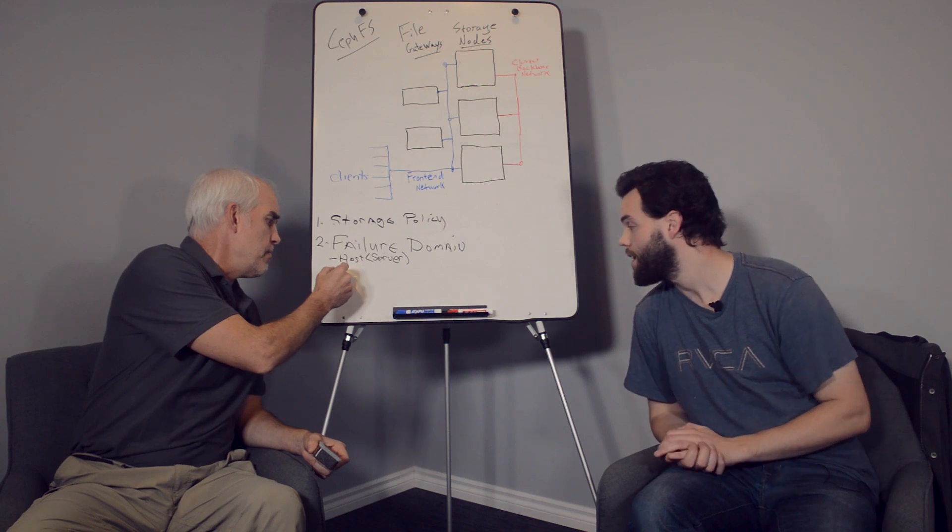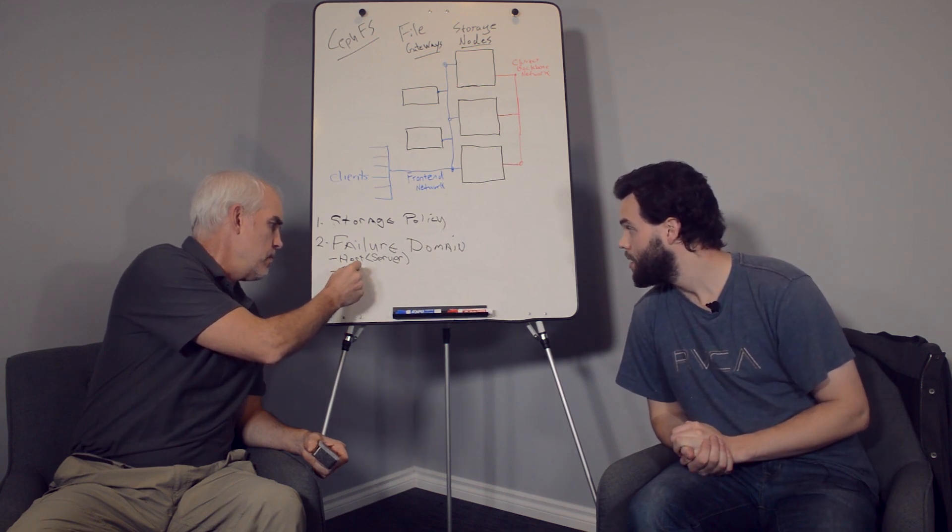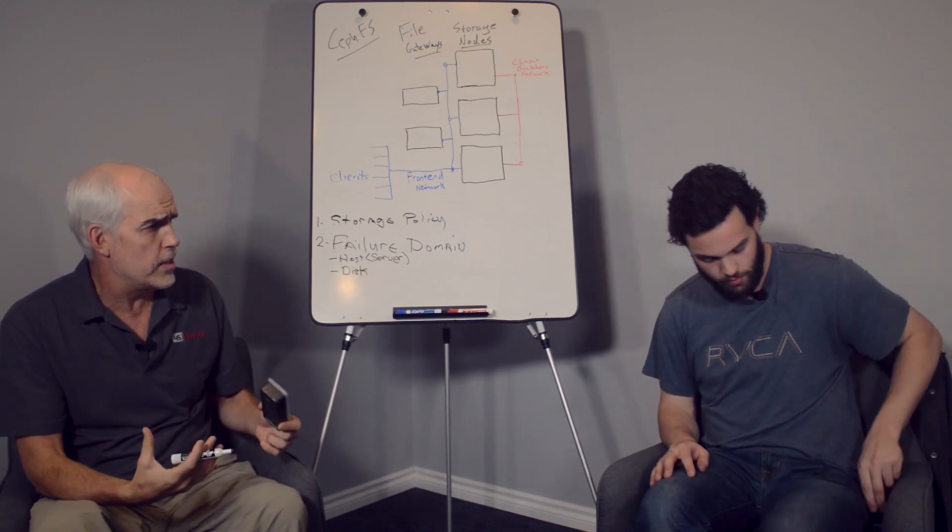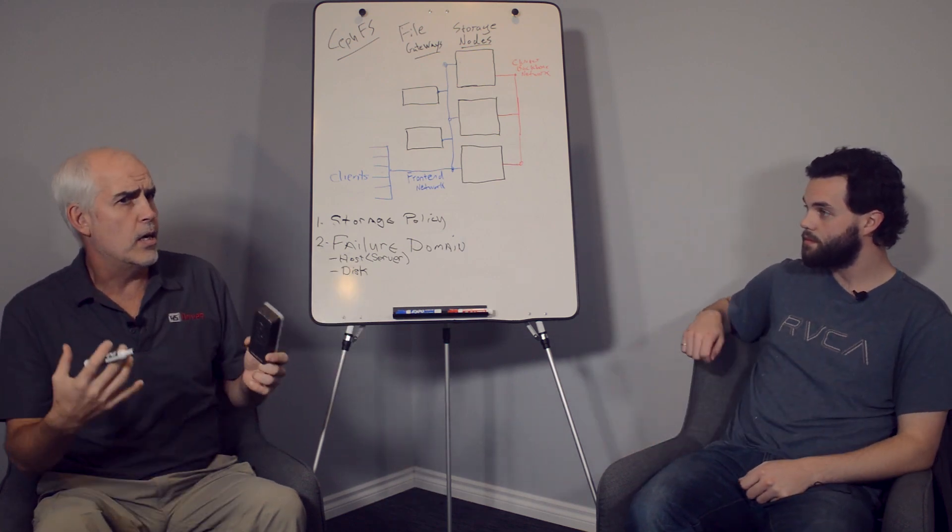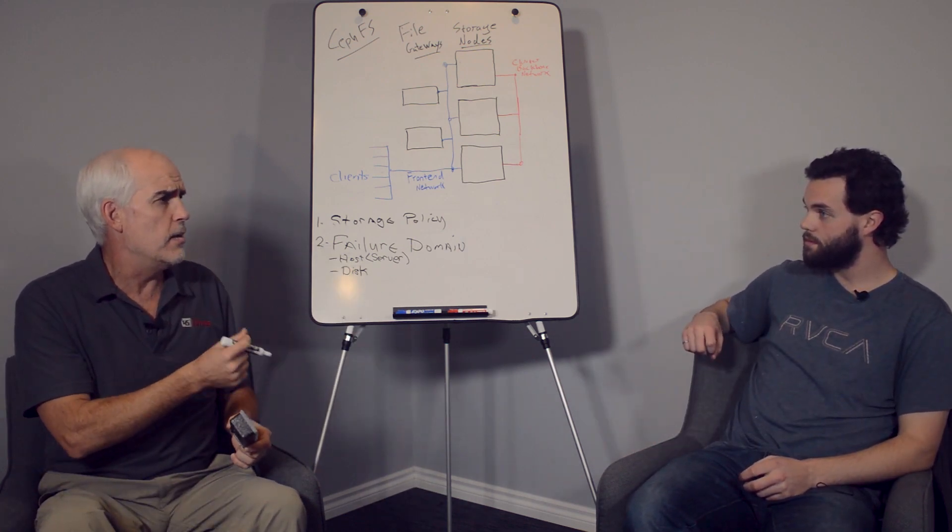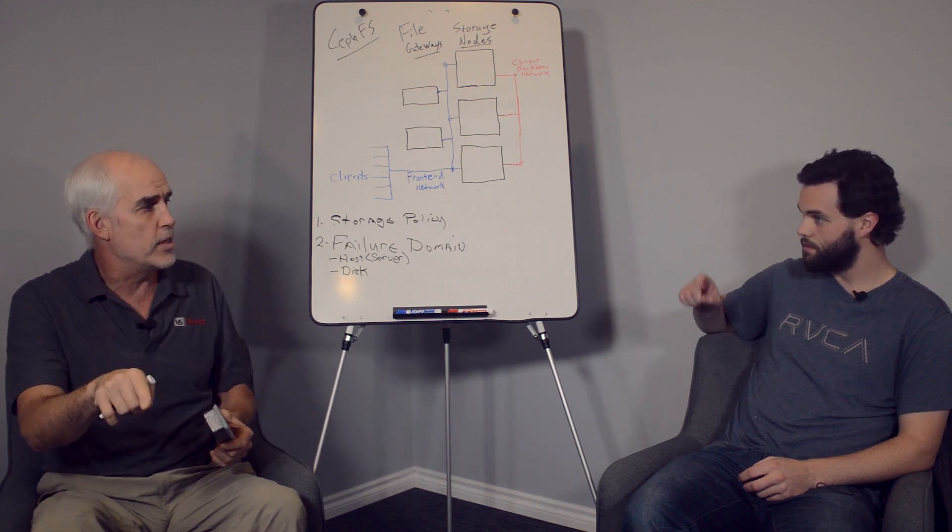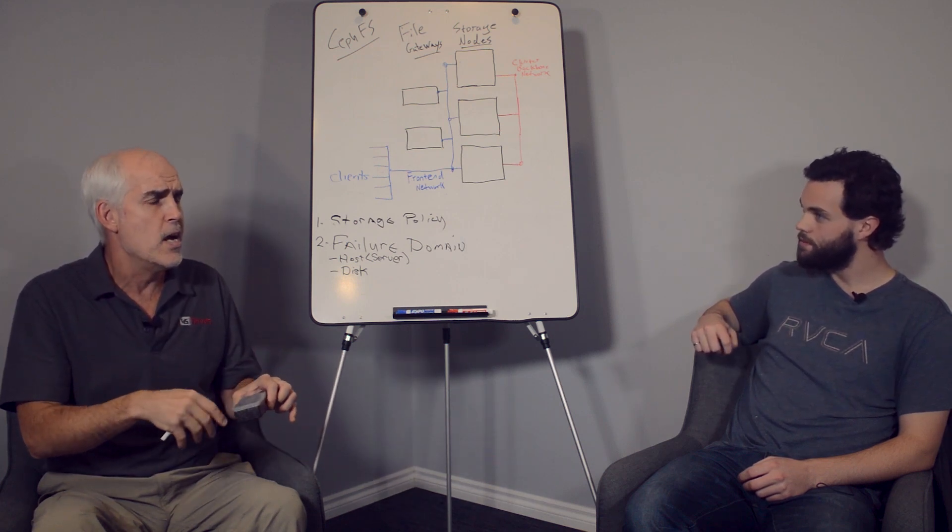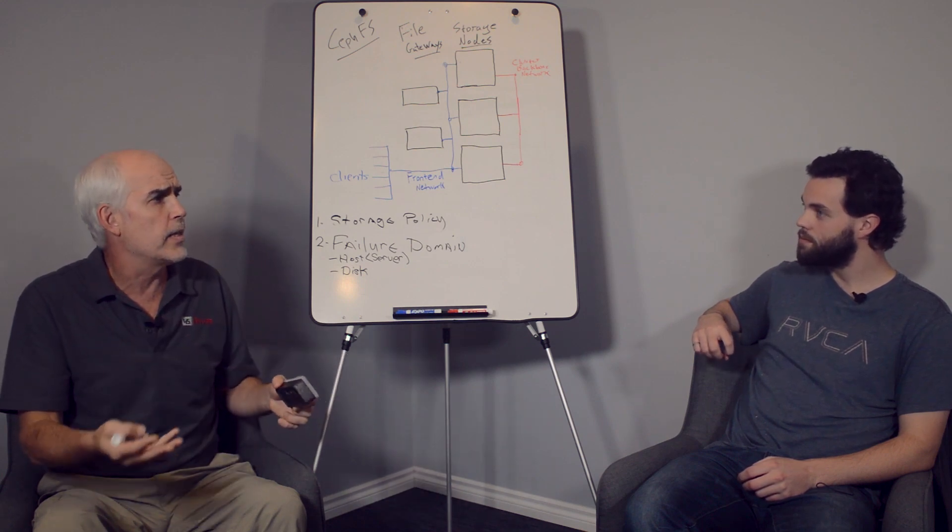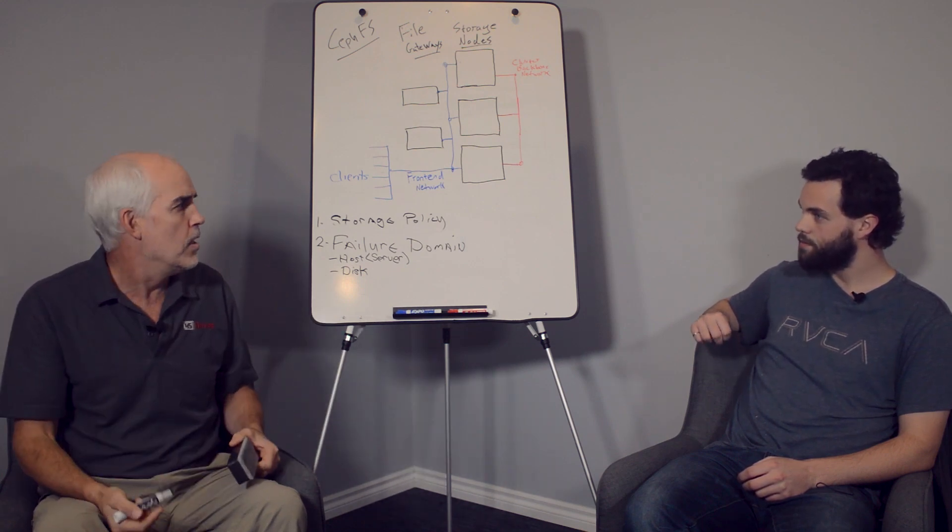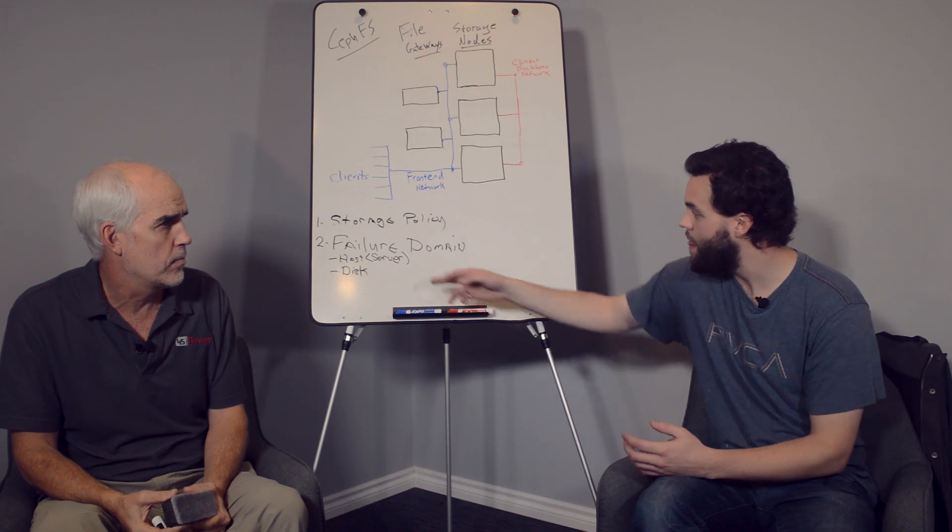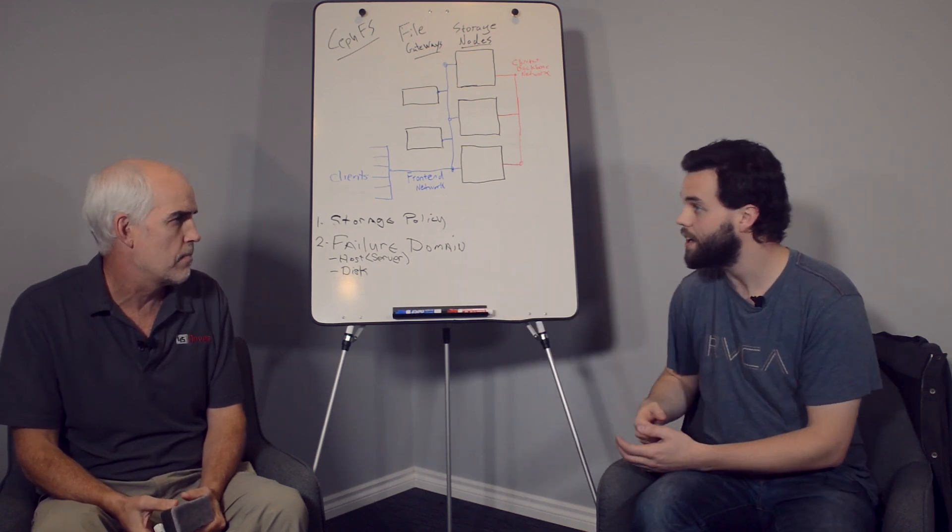You could probably connect the dots - the next layer down, you could set your failure domain at the OSD level, the disk level. The idea is still the same. So disk is my next option. And that's my lowest level. So with disk, following along the logic, what that makes sure is that any piece of data, if I had two replicated, it would mean I have a copy on two separate disks. Now those disks may happen to be in the same server. So if a server died, if my host died, then I'm not protected against that. But I am protected against the hard drive failure.